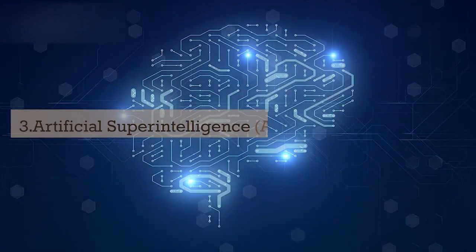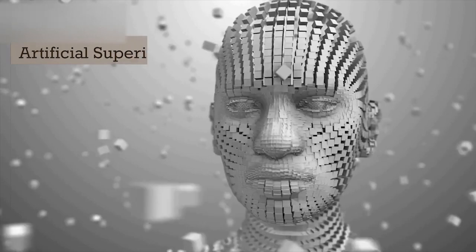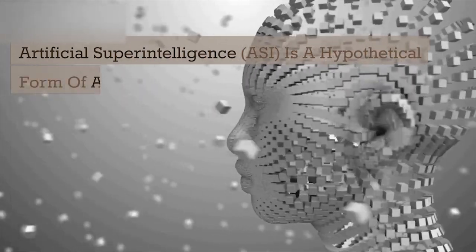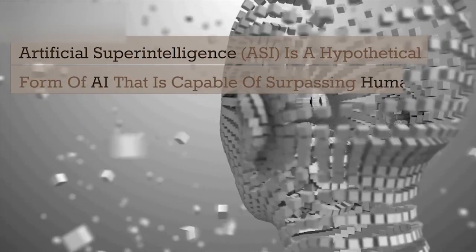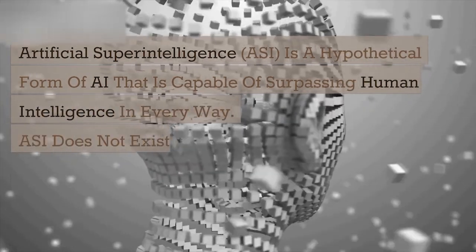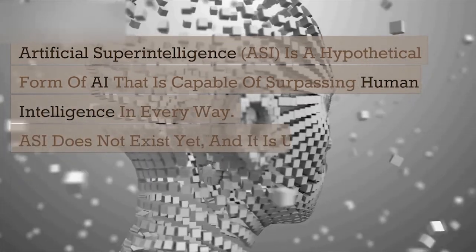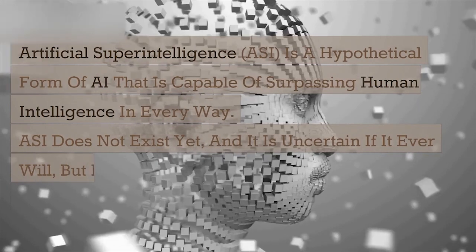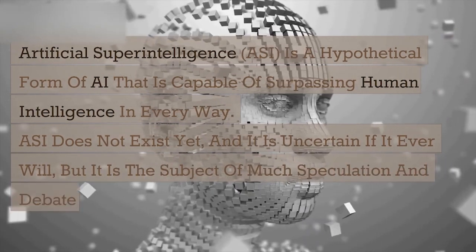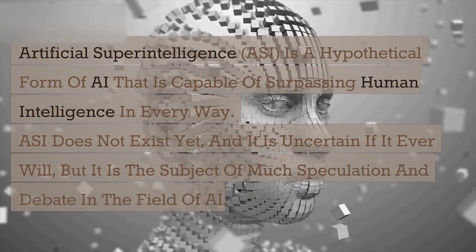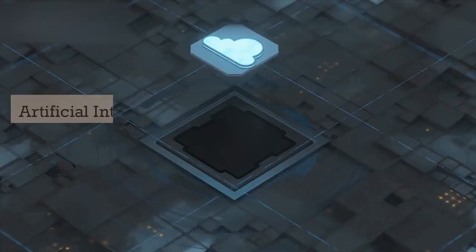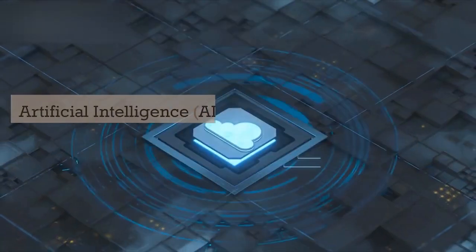Three: Artificial Super Intelligence (ASI). ASI is a hypothetical form of AI that is capable of surpassing human intelligence in every way. ASI does not exist yet and it is uncertain if it ever will, but it is the subject of much speculation and debate in the field of AI.